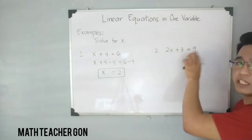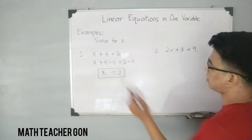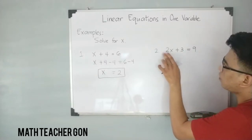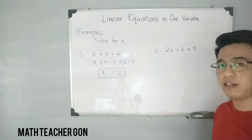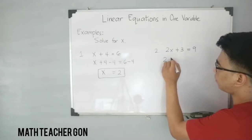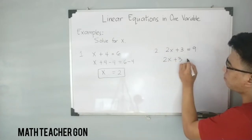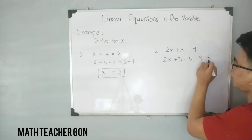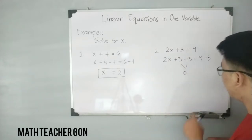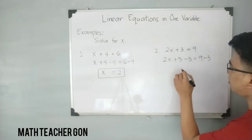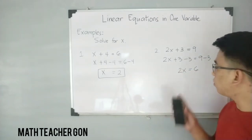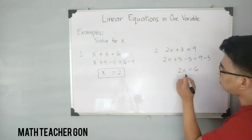We have 2x plus 3 is equal to 9. To get the variable x in this equation, we need to eliminate 3 and 2. The first thing to eliminate is the 3, so subtract 3 from both sides of the equation: 2x plus 3 minus 3 is equal to 9 minus 3. Subtracting gives 0 on the left, so the remaining term is simply 2x, and the right side equals 6.